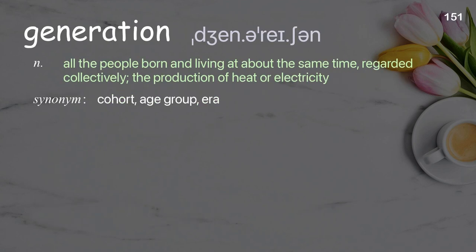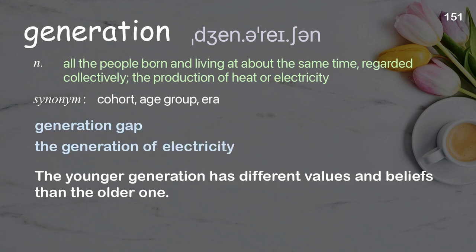Generation: all the people born and living at about the same time, regarded collectively; the production of heat or electricity. Examples: generation gap, the generation of electricity. The younger generation has different values and beliefs than the older one.